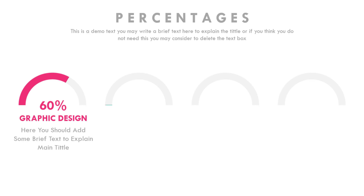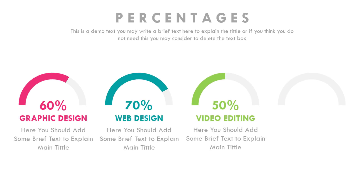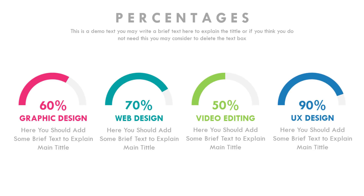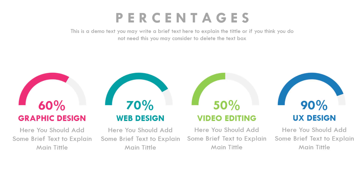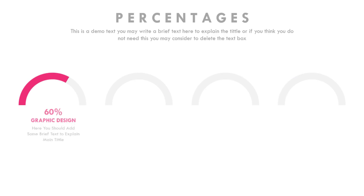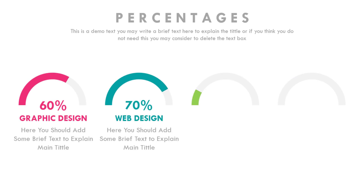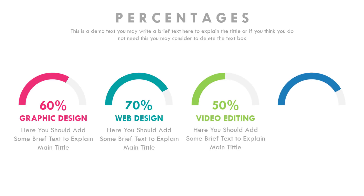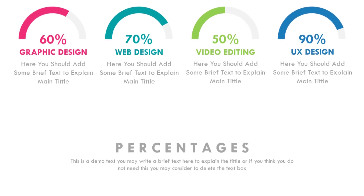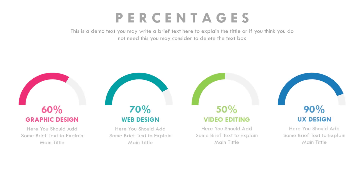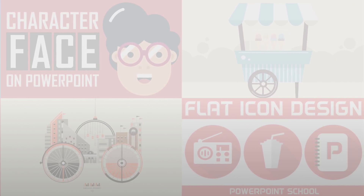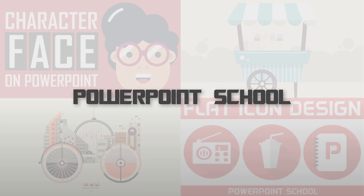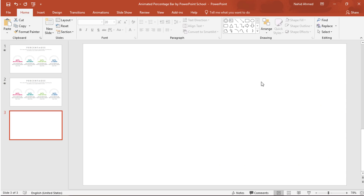Hey guys, this is Zaman and welcome back to another new tutorial of PowerPoint School. In today's tutorial I will show you how to make this animated infographic percentage bar in just PowerPoint. Here you can see that I have created two types of animation: for the first one all the animations are appearing one after another, and for the second one they appear at the same time. Without wasting any further time, let's start today's tutorial. Here I have only taken a blank slide.